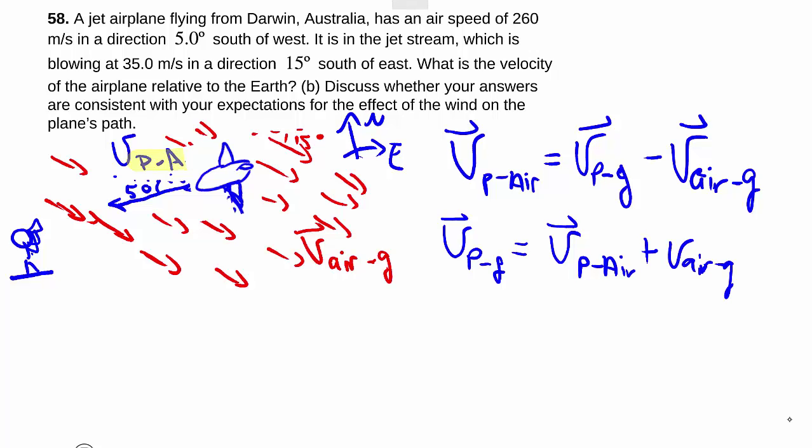And again, because these are vectors, I can't just add them up like numbers. I gotta draw out all the arrows and do the decomposing and all that. So if you were to give me an answer of 260 plus 35, that would be completely wrong.